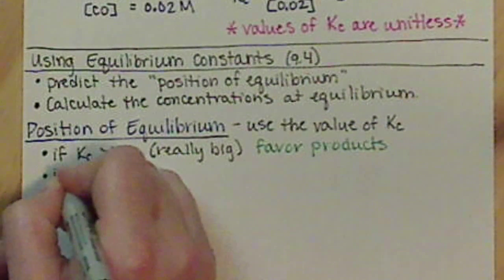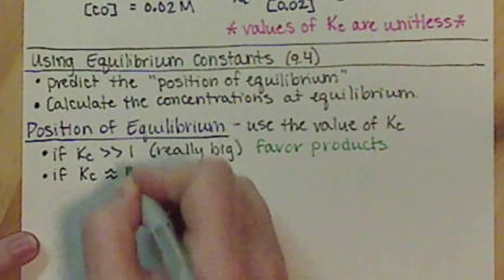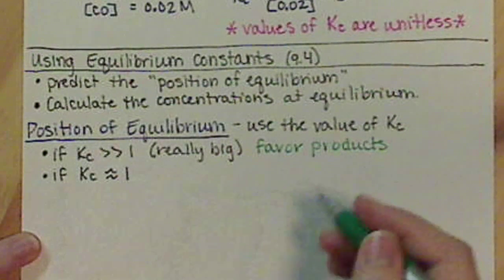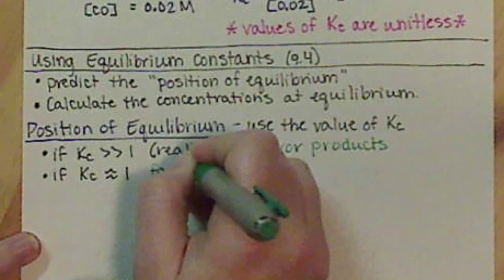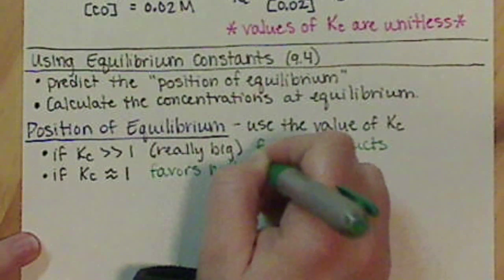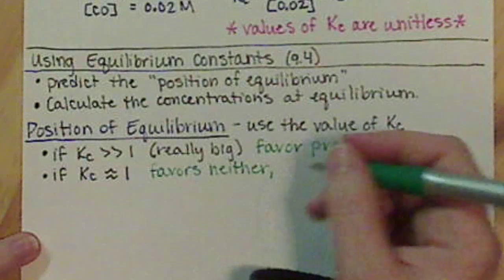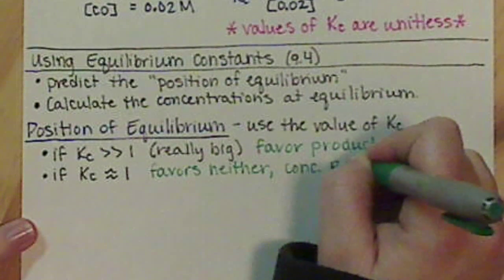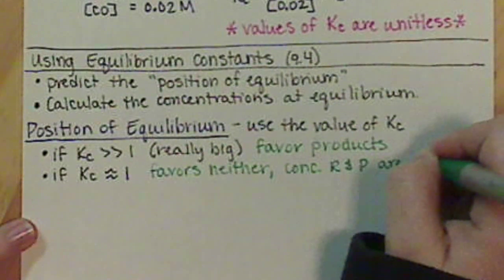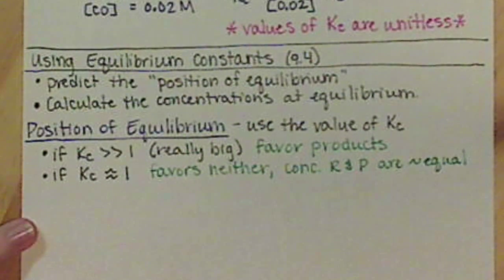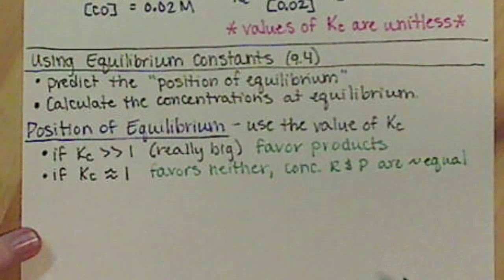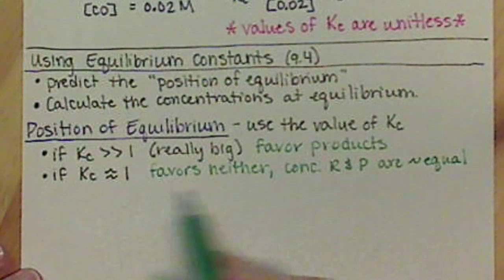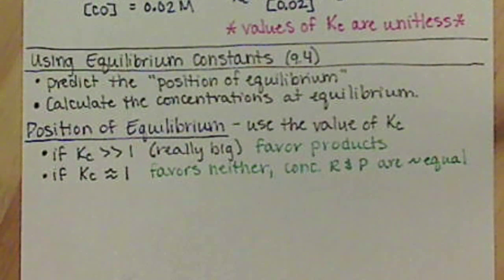Now, if Kc is approximately 1, on the order of 1, then basically the reaction favors neither. So the concentrations of our reactants and our products are approximately equal. That's a little squiggly line just saying it's approximately. It doesn't mean that it's exactly equal, but in general, our equilibrium is fairly equal on both sides.